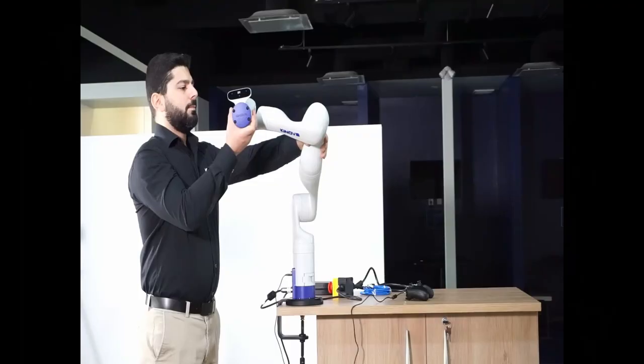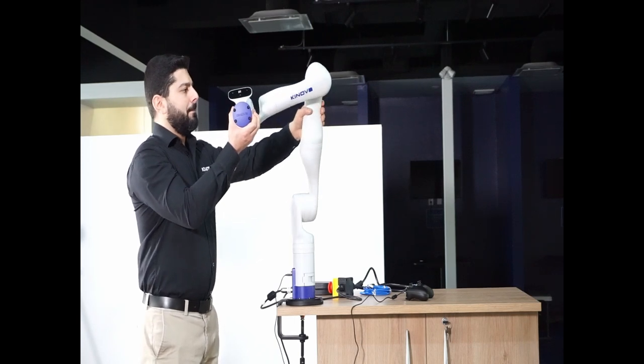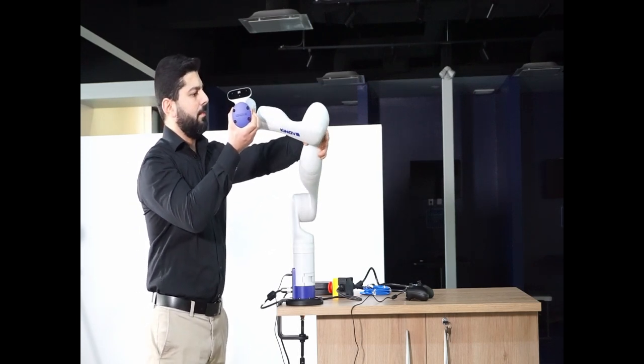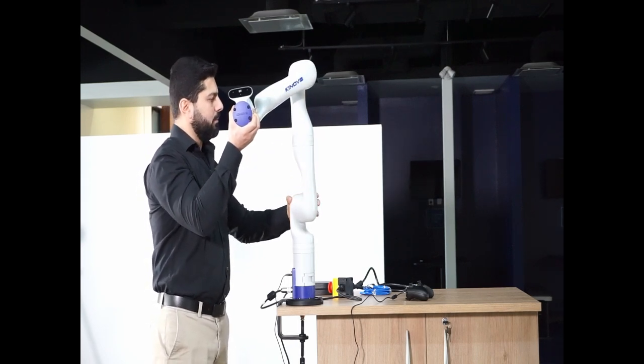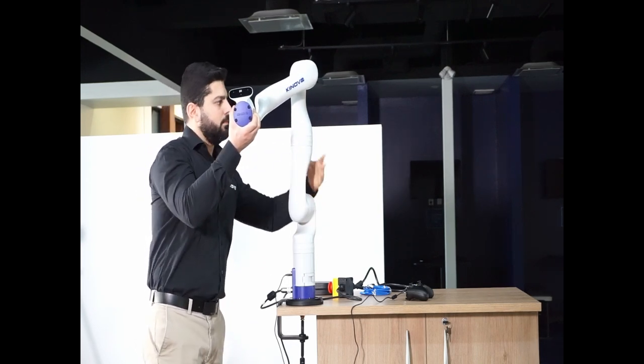For a 6 degrees of freedom robotic arm, you will activate the Cartesian hand guiding mode by pushing and holding the right side button and the joint hand guiding mode by pushing and holding the left button. The null space admittance mode doesn't exist.